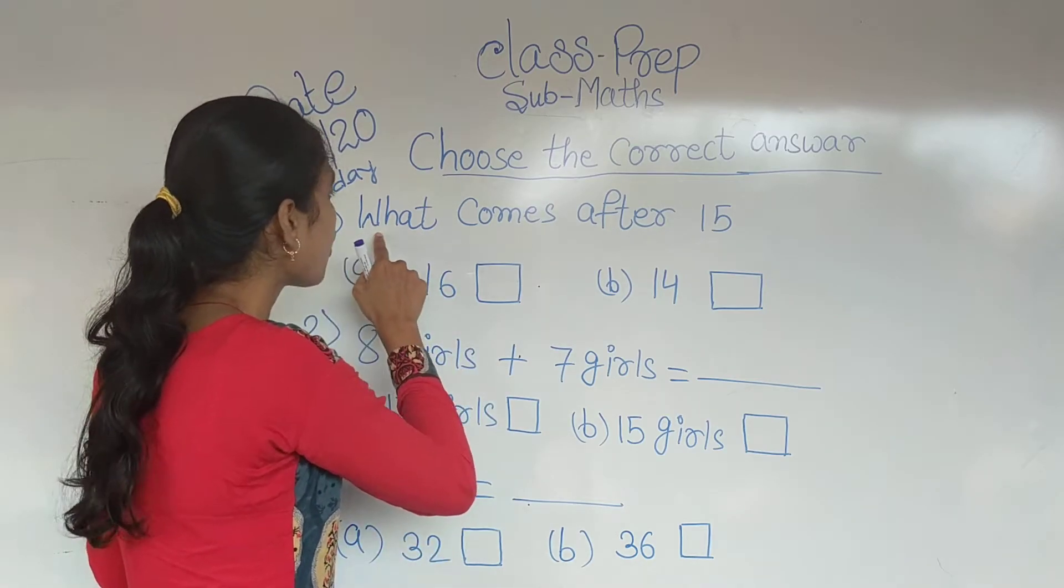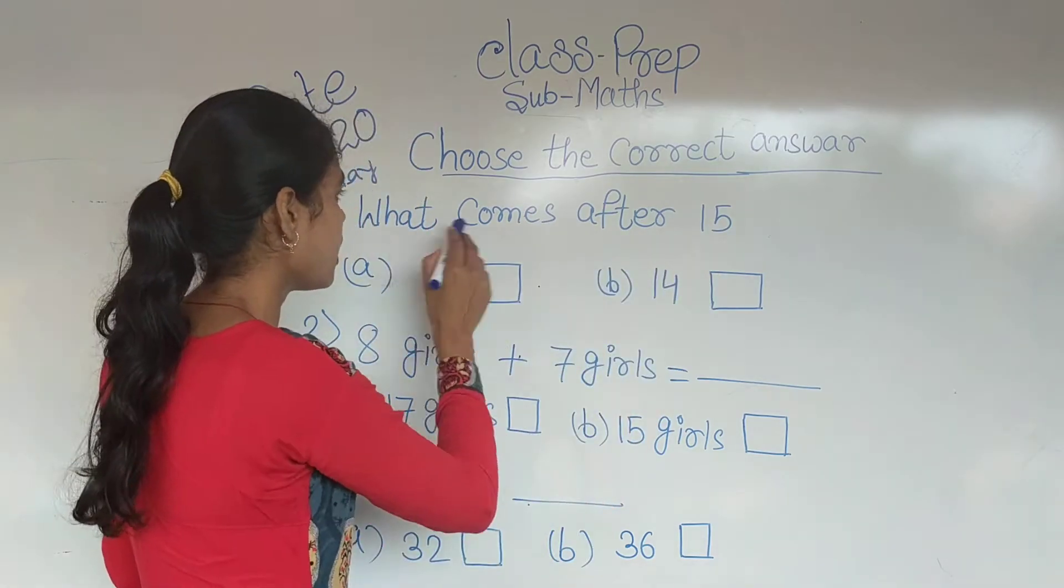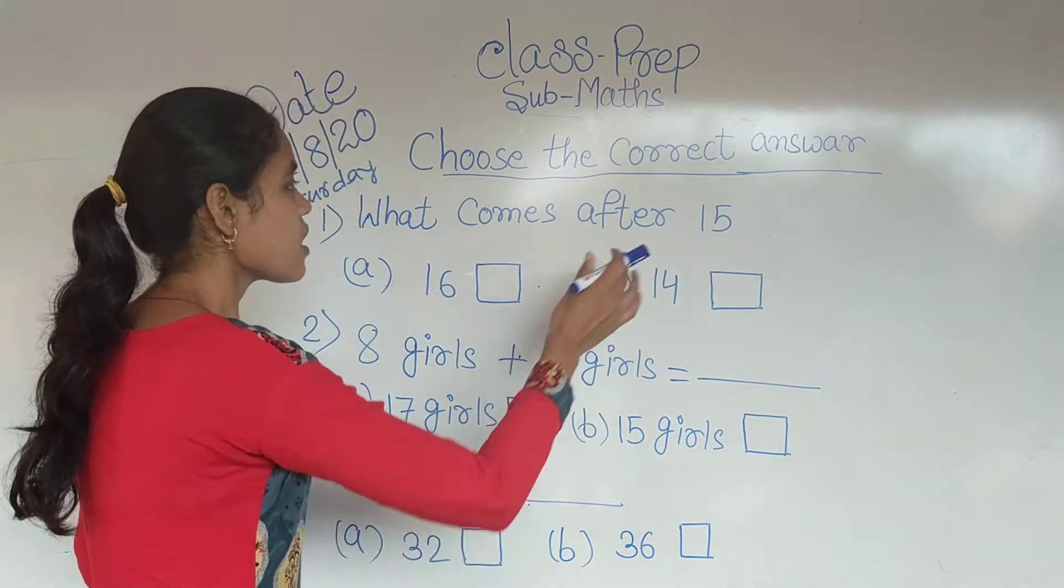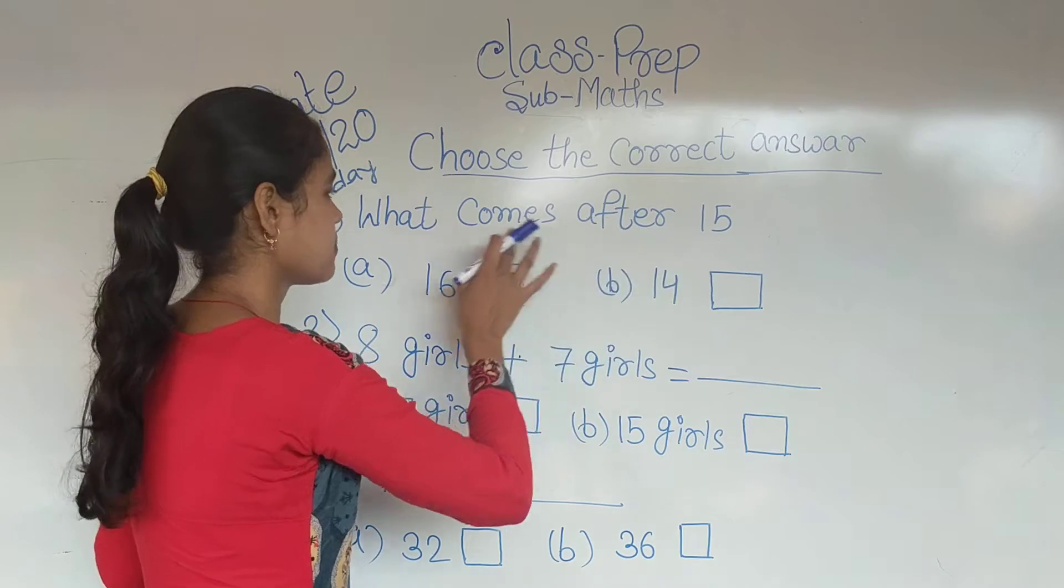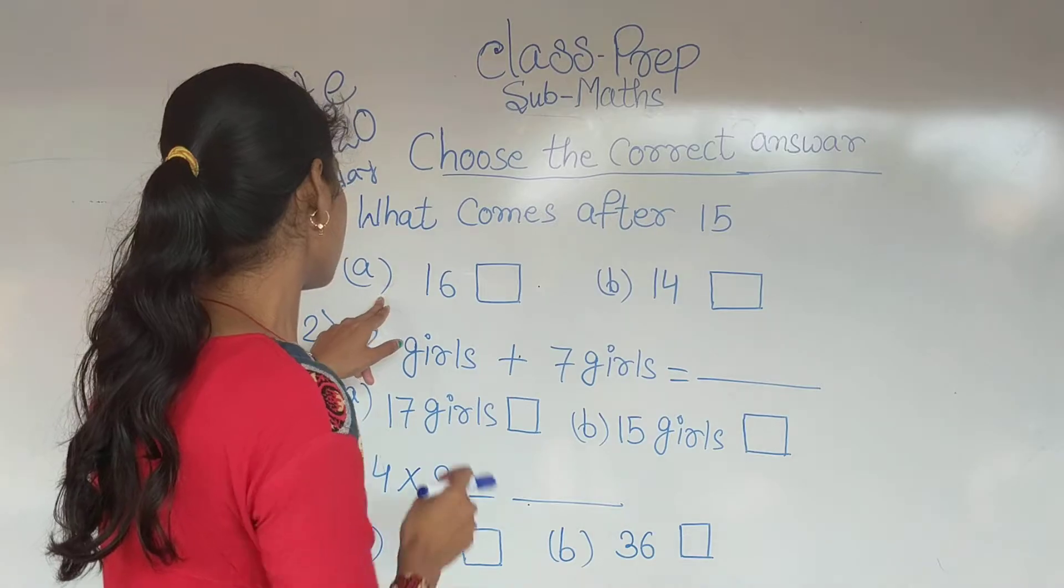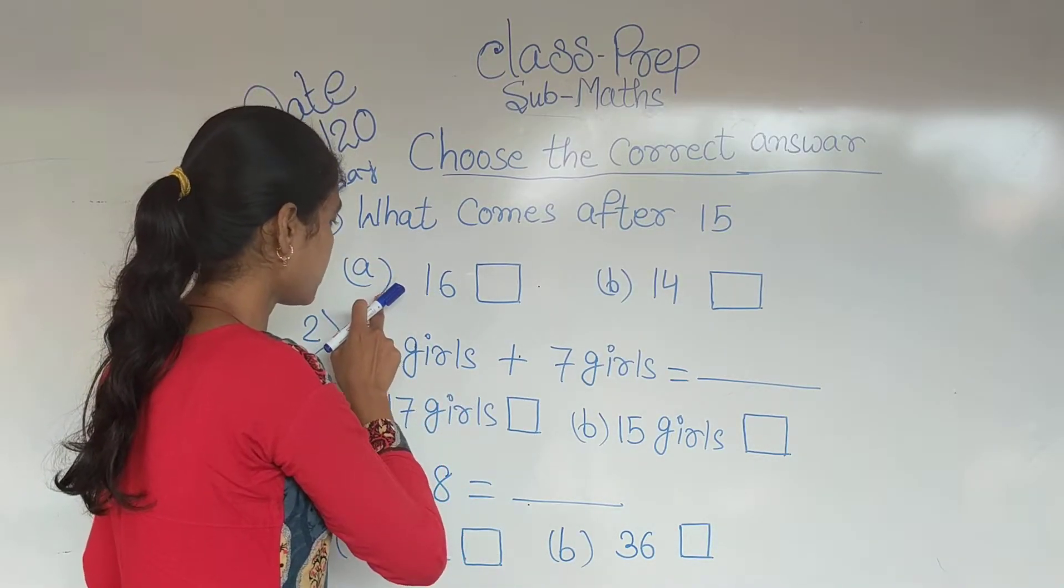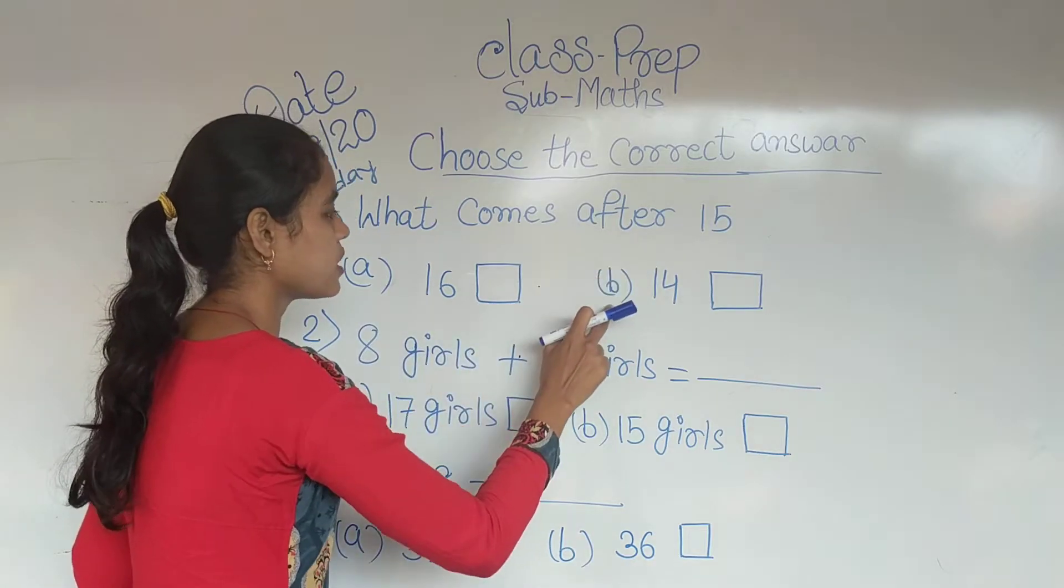Number 1: What comes after 15? 15 ke just baad kaun sa number aata hai? 15 ka after number kya hota hai? Option A: 16. Option B: 14.